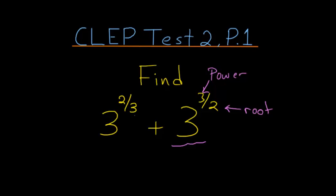So for 3 to the 2 thirds power, that's the same thing as 3 squared, and then we take the cubed root of it.